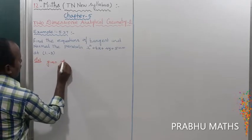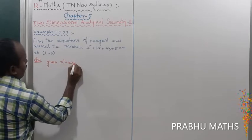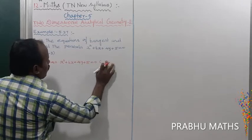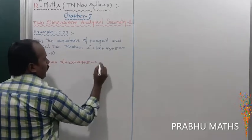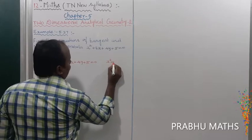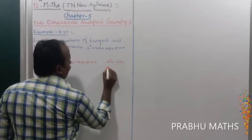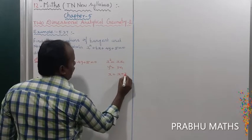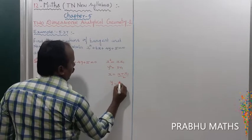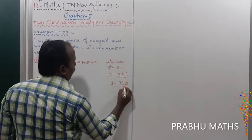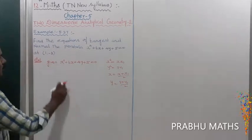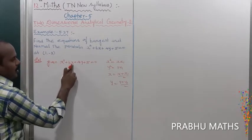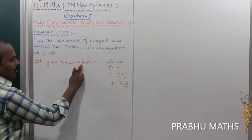The given equation is x² + 6x + 4y + 5 = 0. Applying the formula: x² is replaced by x·x₁, x is replaced by (x + x₁)/2, and y is replaced by (y + y₁)/2.